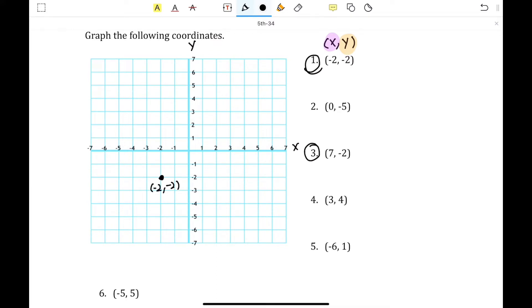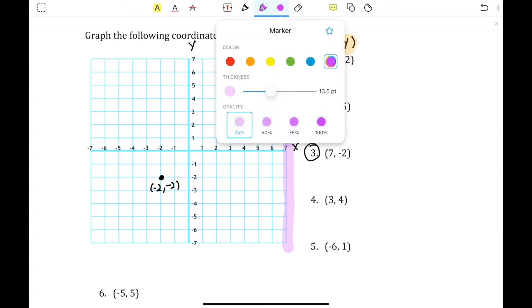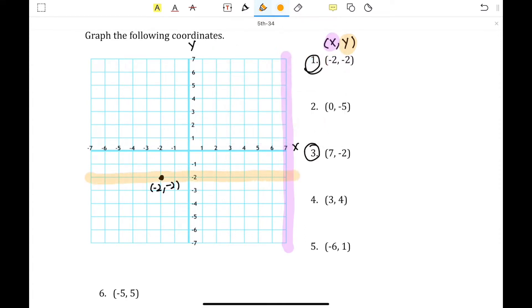Number 3 is 7, negative 2. Again, 7 represents the x value, which is seen right here, and negative 2 represents the y value, which is seen right here. And the intersection of that is right here, and that will be where your 7, negative 2 coordinate is located.